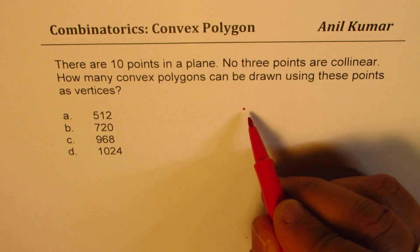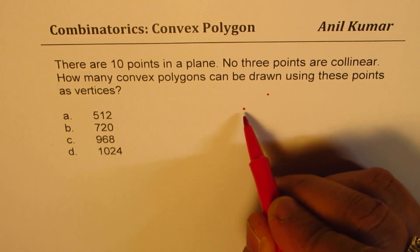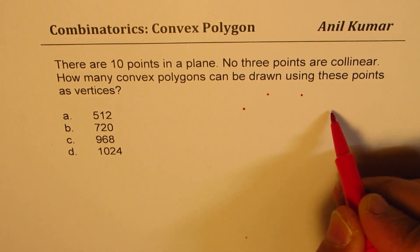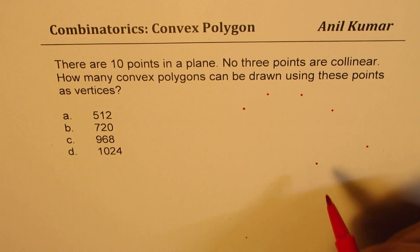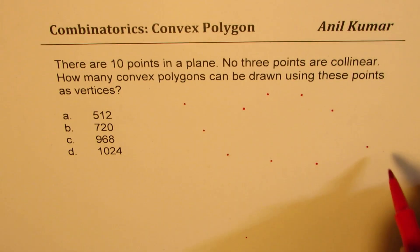So the points could be, so they are not three in a row, right? So we cannot put three in a row. One, two, let's say three, four, five, six, seven, eight, nine, and some other point, ten. Let's say we have these 10 points.